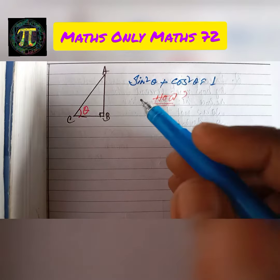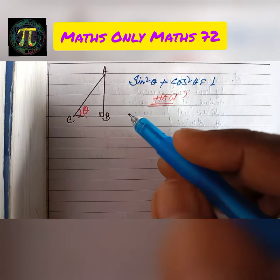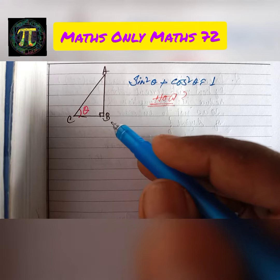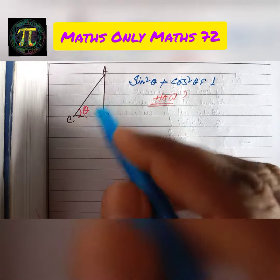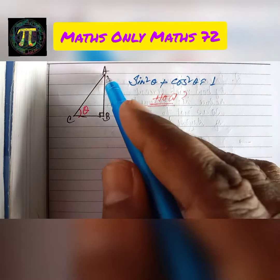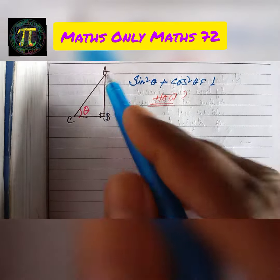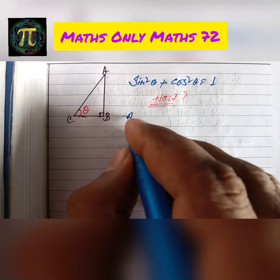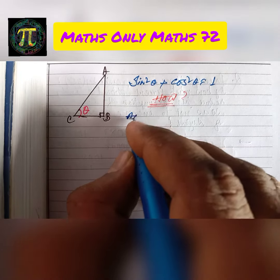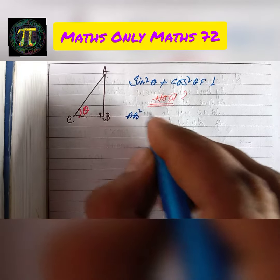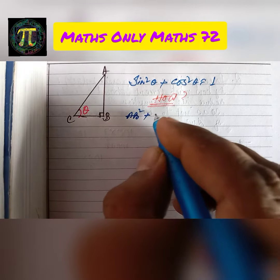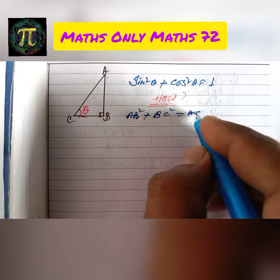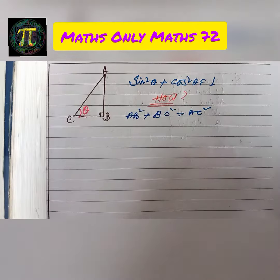According to Pythagoras theorem, in a right-angled triangle, base squared plus height squared equals hypotenuse squared. So we can write AB squared plus BC squared equal to AC squared.